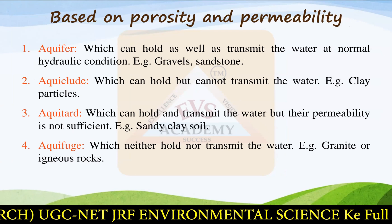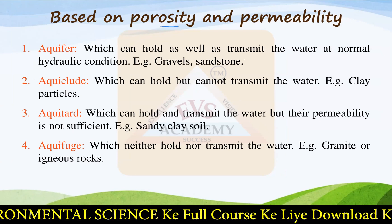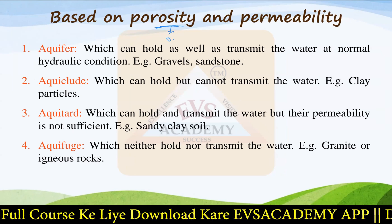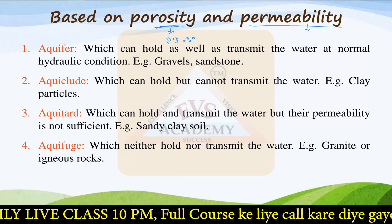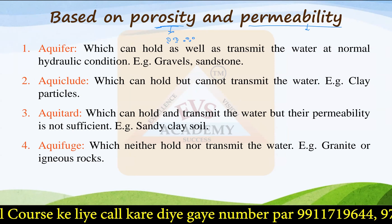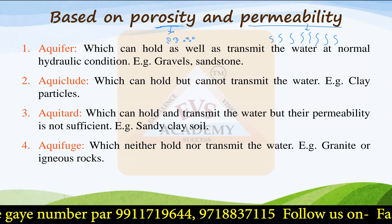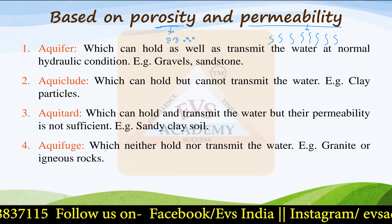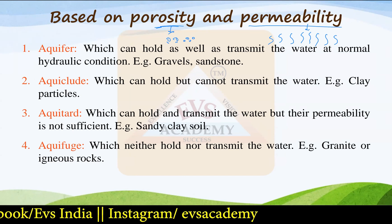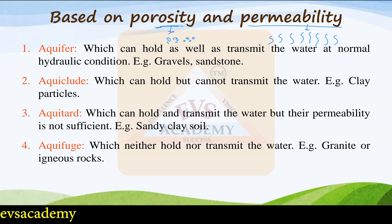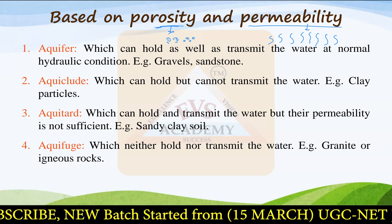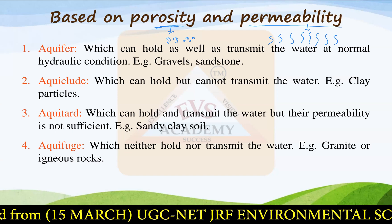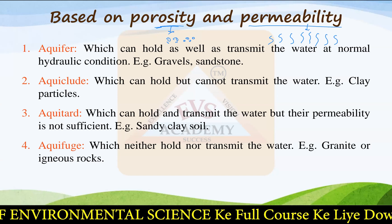Based on porosity and permeability of the rock or soil, groundwater is further classified. Porosity means how many pores are present — the higher the number of pores, the higher the porosity. Permeability is the ease with which the soil or rock allows water to pass through it. Higher ease means higher permeability. If very little water can pass, the material is less permeable. In the case of clay soil, permeability is almost none, so it is termed an impermeable layer through which water cannot pass at all.